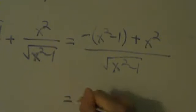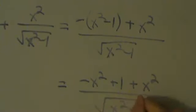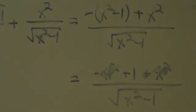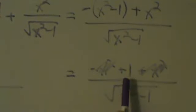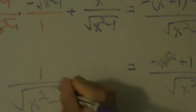Distributing the negative sign gives us negative x squared plus 1, then plus x squared, all divided by root x squared minus 1. The negative x squared and positive x squared cancel, and we're just left with positive 1 on top. So this equals 1 divided by root x squared minus 1. That's the result we were looking for — 1 over root x squared minus 1 is the derivative of the inverse hyperbolic cosine.